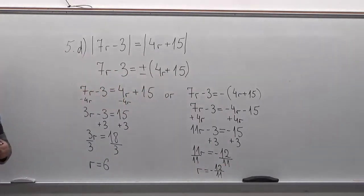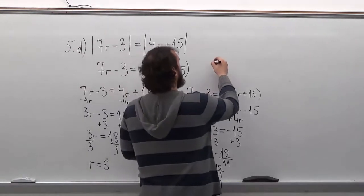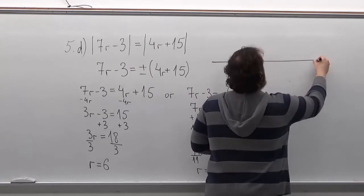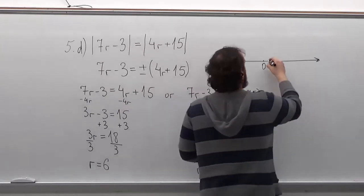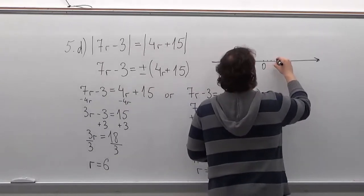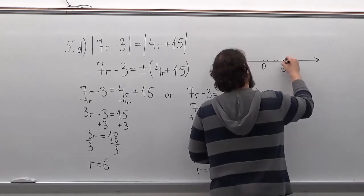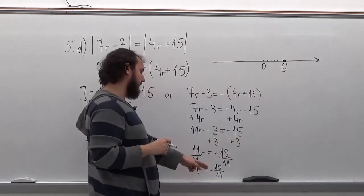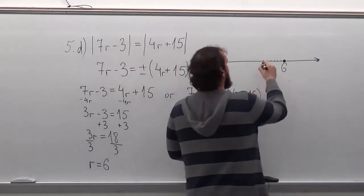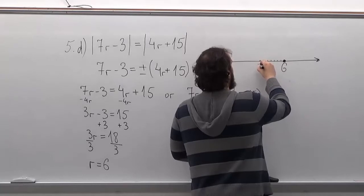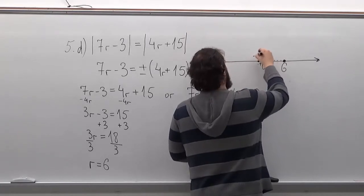Now we need to draw a number line and show those points on it. So I'll draw a number line here and put a 0. Our first answer was 6, so we'll put a dot there. And our second answer was minus 12 over 11. This answer is going to be between minus 1 and minus 2, so you can write minus 1 and then put a dot right after it and write minus 12 over 11.